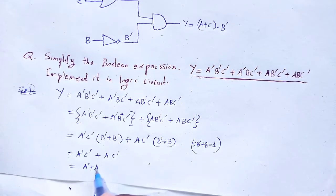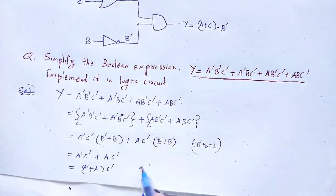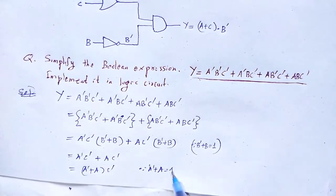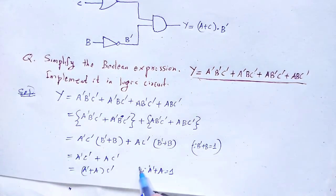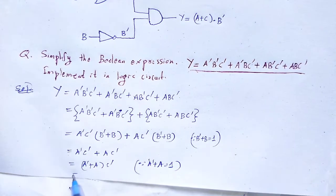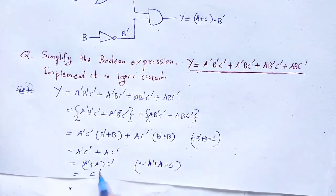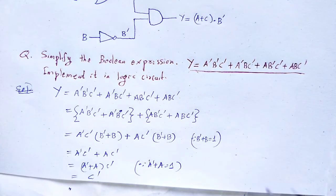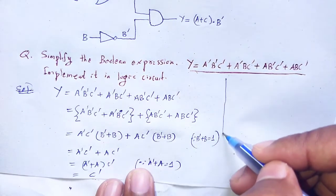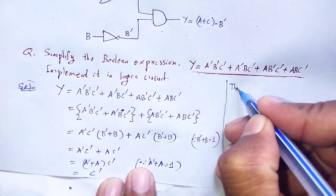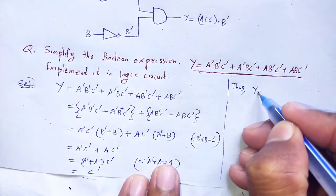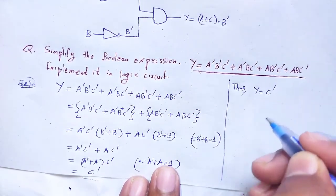Again taking C' as common from A'C' + AC', we get C'(A' + A). Since A' + A = 1, therefore C'·1 = C'. Thus, Y = C'.